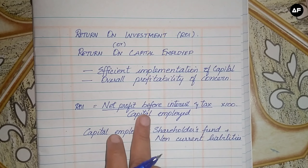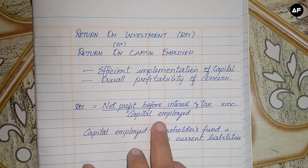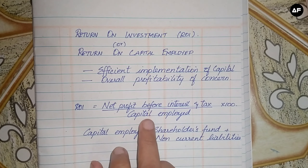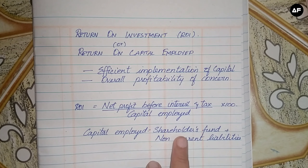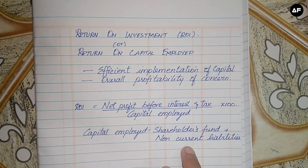Return on investment is net profit before interest and tax — which will be given in the sum separately as additional information — divided by the capital employed. All sums relating to return on investment will be based on the balance sheet. Capital employed can be easily calculated using the labels on the balance sheet: shareholder funds plus non-current liabilities.